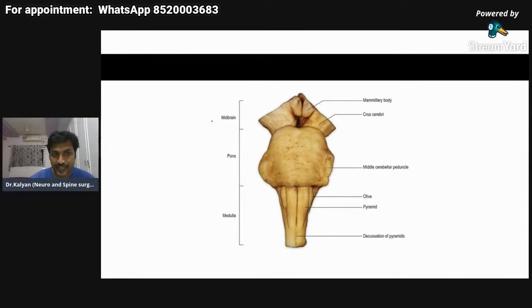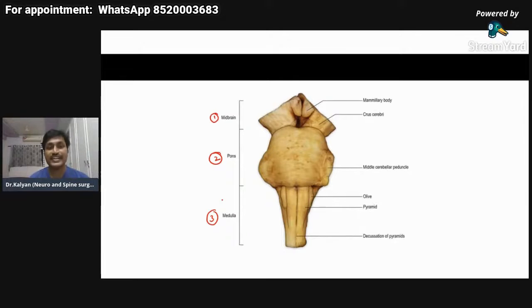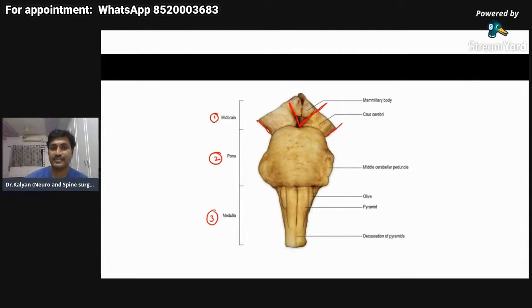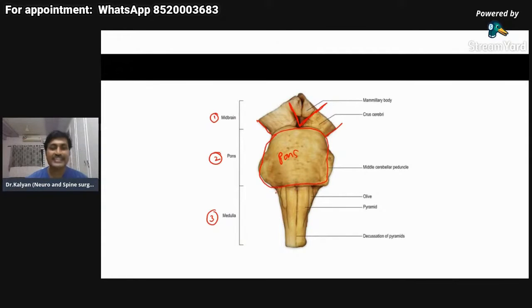This is the front picture. First one is the midbrain, second one is the pons, third one is the medulla. Each structure has a different shape: the midbrain looks like a V-shaped or cross-shaped structure; the pons looks like a horizontal quadrilateral structure; and the medulla oblongata looks like a rostral cylindrical structure, which is a rostral continuation of the spinal cord.